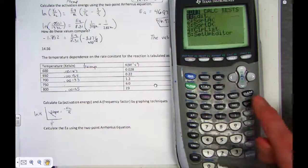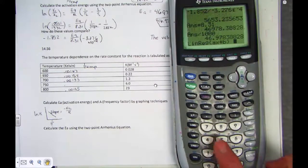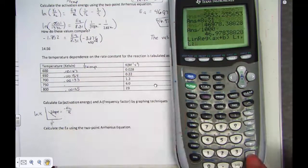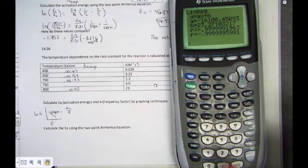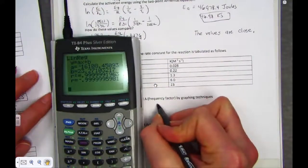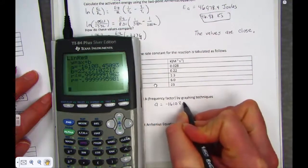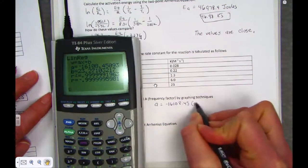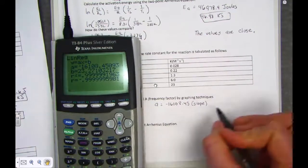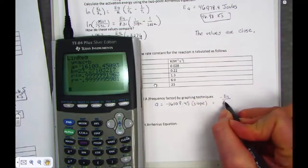We want a graph. So, graph, calc, choice 4 is your linear regression. Mine are contained in list 1, list 2. And let's run that diagnostics. We find, from running the graph, that A is equal to negative 16,108.45. Remember, that's the slope of our line. The slope is equal to negative Ea over R. R is our constant, 8.31.